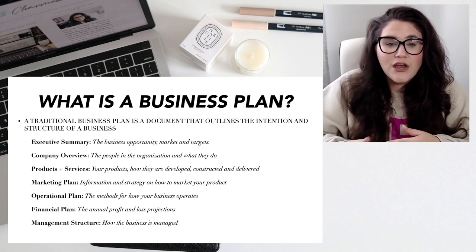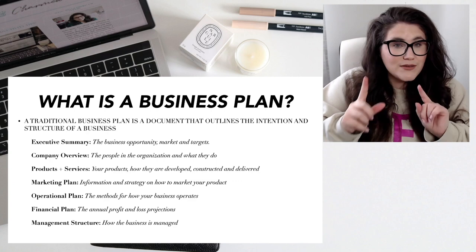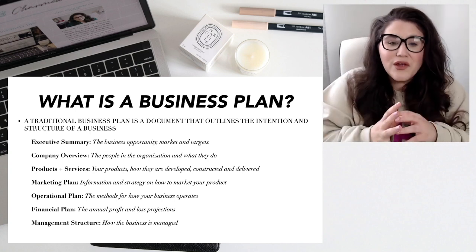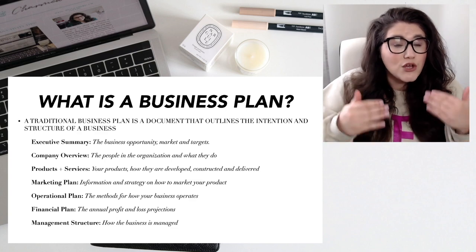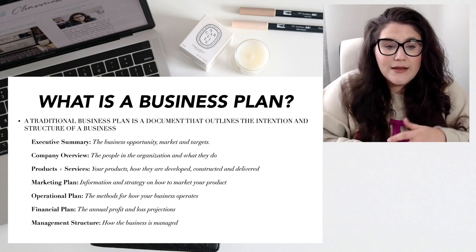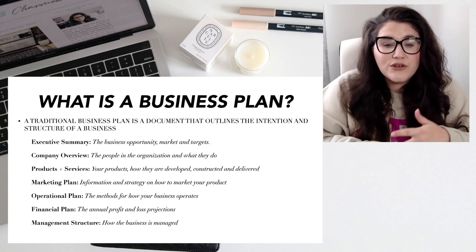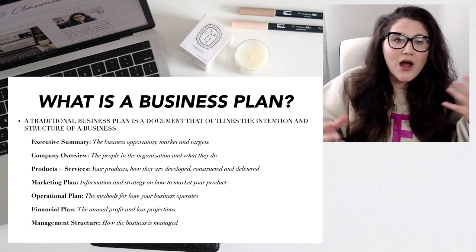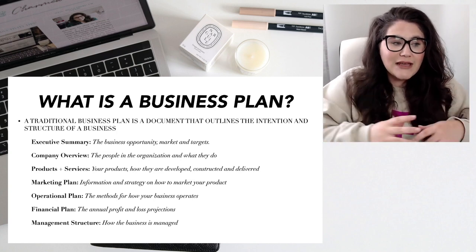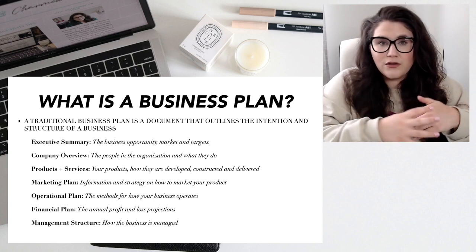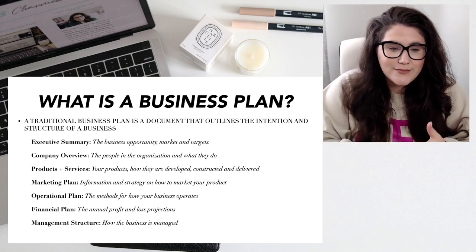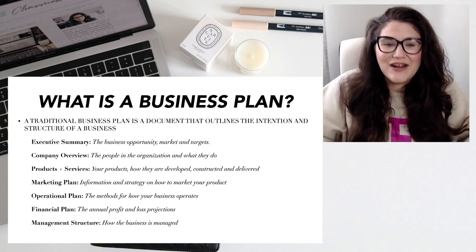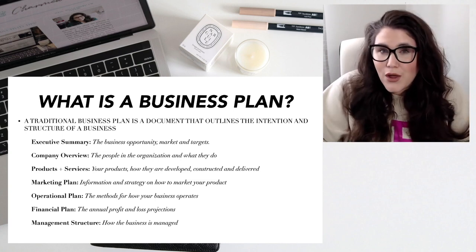The traditional business plan also includes a marketing plan — information and strategy on how to market your product — an operational plan covering the methods for how your business operates and day-to-day operations, a financial plan with annual profit and loss projections, and finally the management structure — how the business is actually going to be managed to make sure things are getting done. That is the basic structure of the traditional business plan.